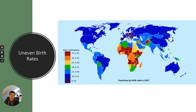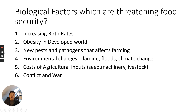However, people still starve and are unfortunately undernourished. The main biological factors mentioned in the spec that are threatening food security are: increasing birth rates, obesity in the developed world, new pests and pathogens that affect farming, environmental changes such as famine, floods, and climate change, costs of agricultural inputs such as seed, machinery and livestock, and conflict and war. I'm going to go through each of those. In an exam, they would likely give you some data, but the spec mentions these specific six factors, so I would learn all six.